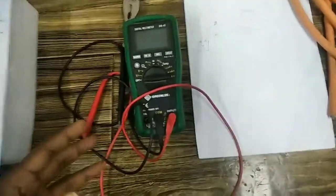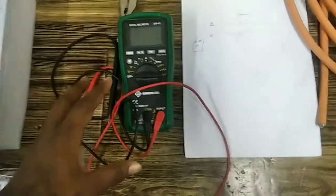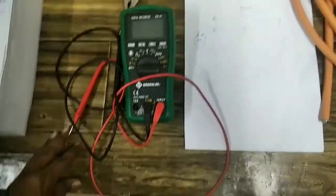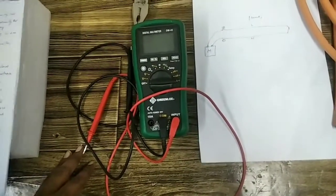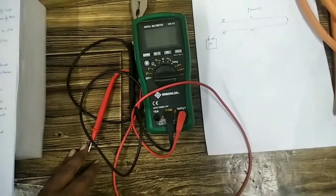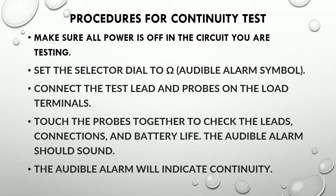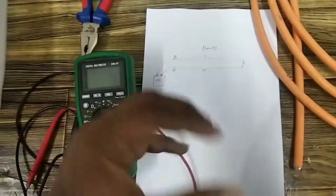First of all we have to understand what is a continuity test. A continuity test is a quick check to see if a circuit is open or closed, because only a closed or complete circuit will give continuity. Basically, continuity is a closed path for current flow.